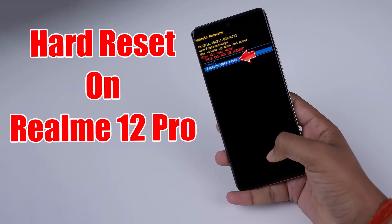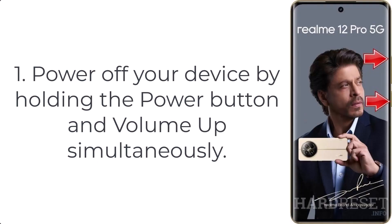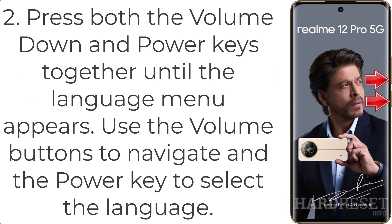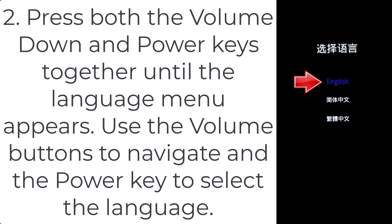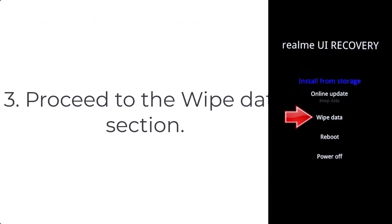How to hard reset Ring 12 Pro 5G. Step 1: power off your device by holding the power button and volume up simultaneously. Step 2: press both the volume down and power keys together until the language menu appears. Use the volume buttons to navigate and the power key to select the language. Step 3: the recovery mode will be on the screen after a moment.